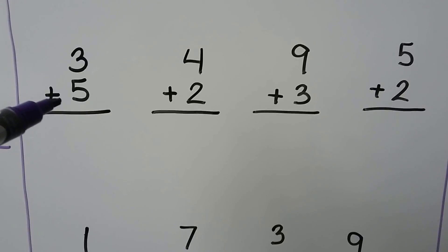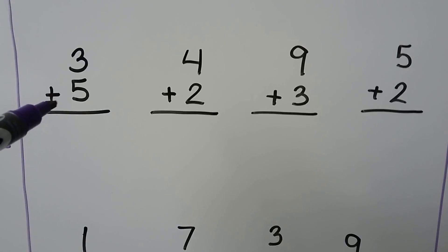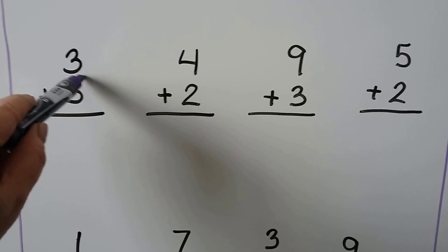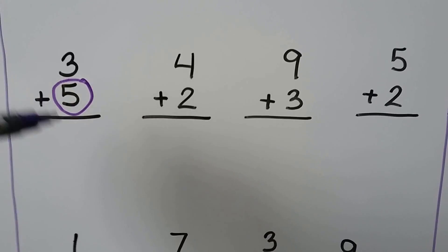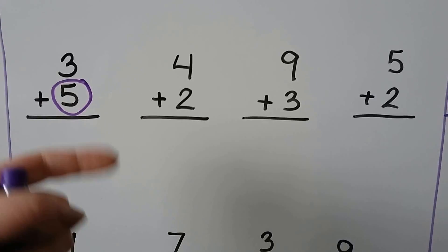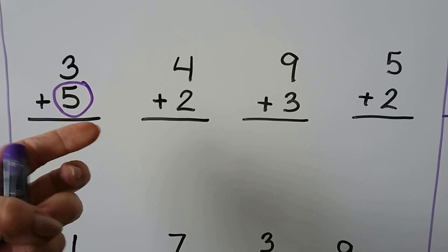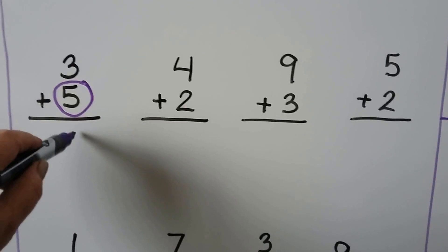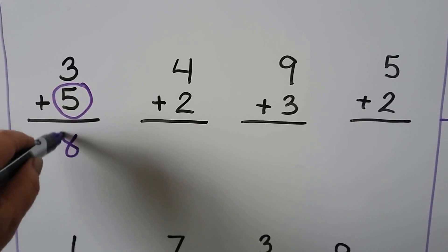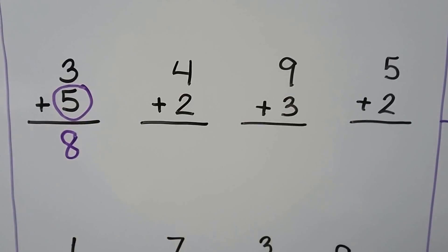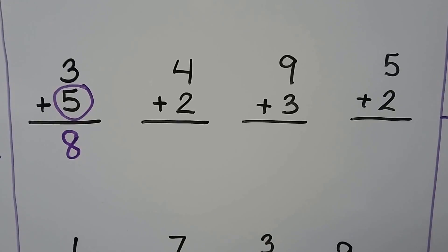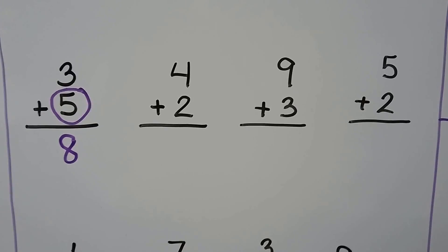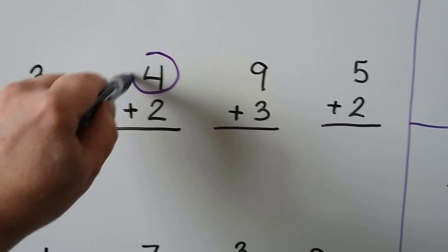3 plus 5 — 5 is the greater addend, isn't it? 5, 6, 7, 8. 3 plus 5 is equal to 8. 4 plus 2 — 4 is the greater addend.